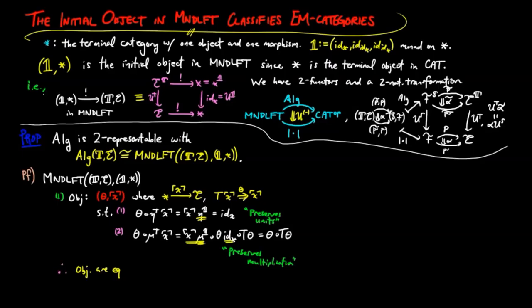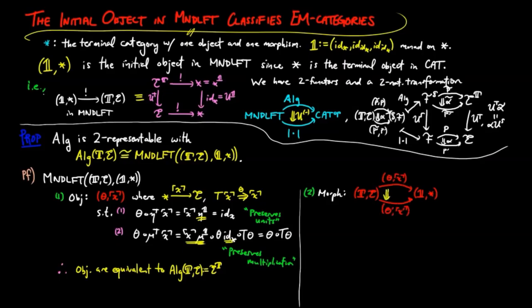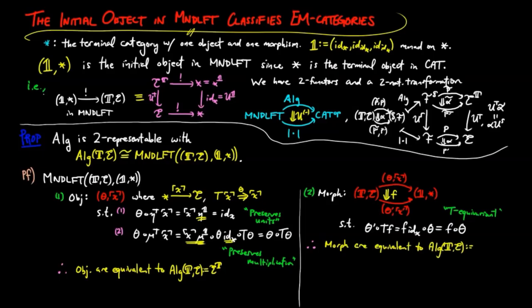Therefore, objects in this HOM category are equivalent to objects in the Eilenberg-Moore category for the monad T. The morphisms in the HOM category are transformations F from the object (theta, X) to (theta', X'), and by definition satisfy the equation theta' composed with TF equals F composed with theta, which shows that as morphisms they are T-equivariant. Therefore morphisms in this HOM category are equivalent to the morphisms in the Eilenberg-Moore category for the monad T, and thus Algebra(T, E) is isomorphic as categories to the HOM category of monad lifts from TE to the initial object.